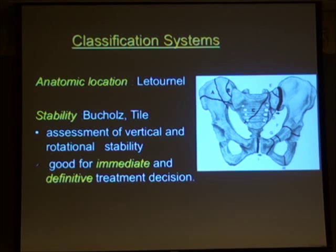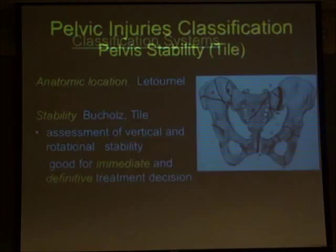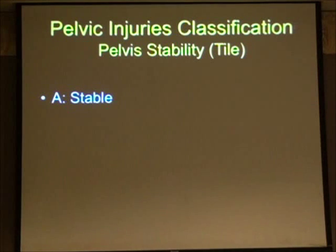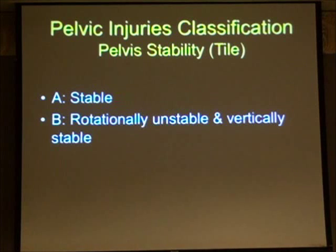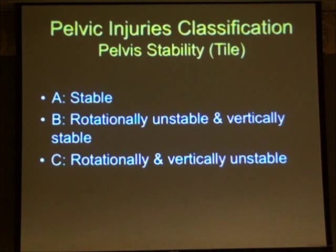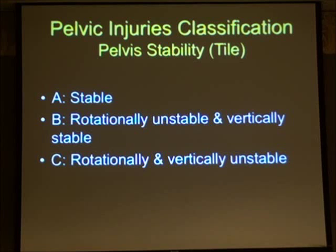Buckles and Tile looked at classification relating to stability of the pelvis, essentially dividing it into rotational and vertical instability. Type A fractures are stable. Type B fractures are rotationally unstable — they open up — but are vertically stable, so they don't move up or down relative to each other. Type C fractures are both rotationally and vertically unstable. These are very serious injuries needing immediate management. Many Type B and C patients have associated injuries.